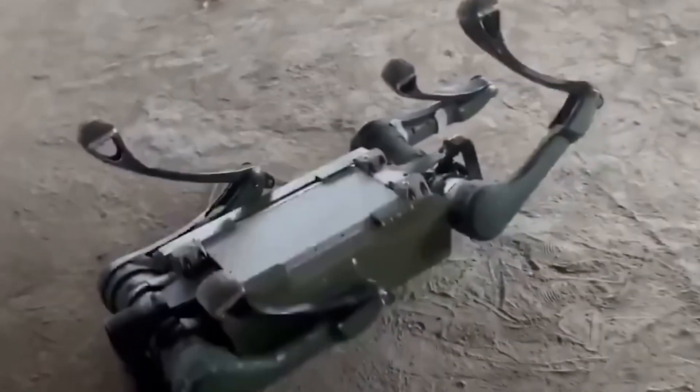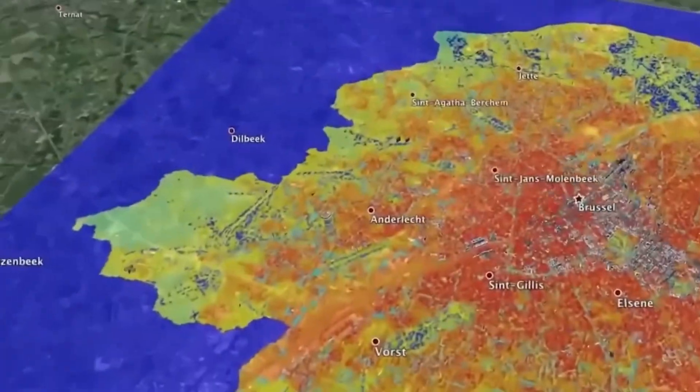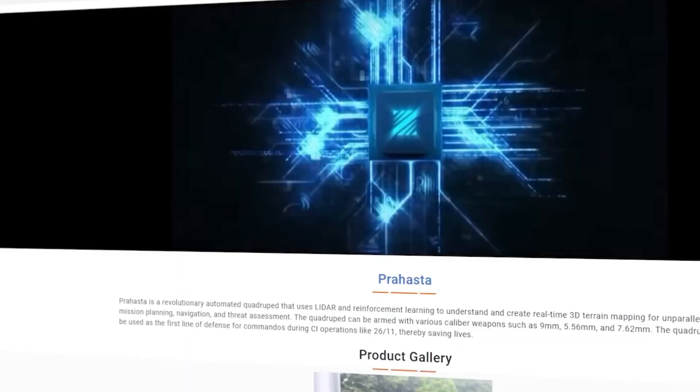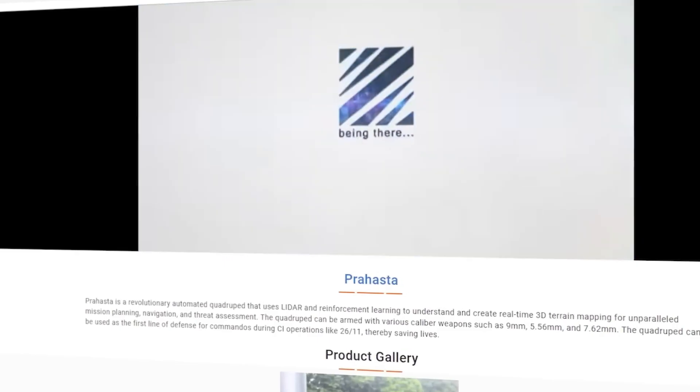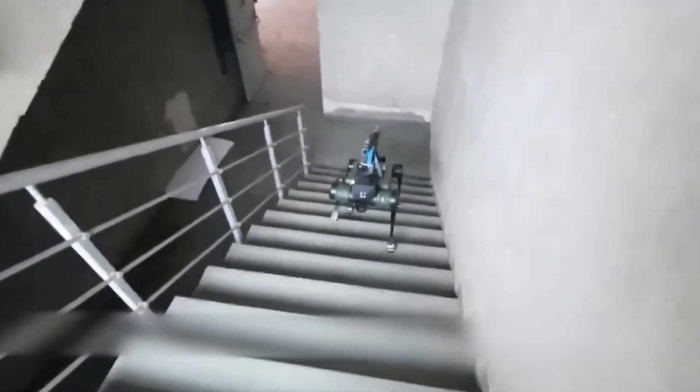Prahasta is built for defense. It's got some seriously cool tech too. Using something called LiDAR, like radar but with lasers, this robot scans its surroundings. And with its built-in AI, it understands the terrain, plans missions, and overcomes obstacles like a beast. You've got to see it to believe it.